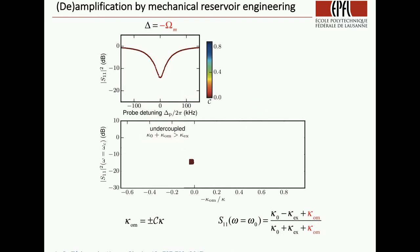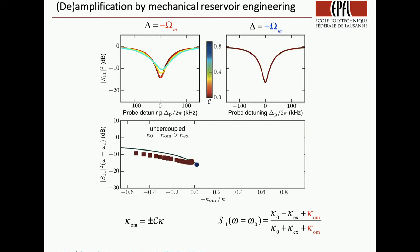We try to trace the position of this point when we change the pump power. Here we fix the pump at the red sideband and increase power. We see our resonance becomes shallower and shallower, which means we are undercoupled. We get positive modification by optomechanics and become more undercoupled. If we go to the blue sideband, we become deeper instead. We become closer to critically coupled, then become shallower again as we go to the overcoupled regime, when external decay rate dominates over intrinsic decay rate with optomechanical correction, because now the correction is negative.